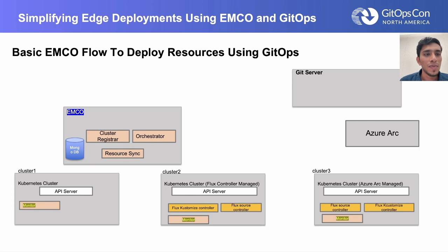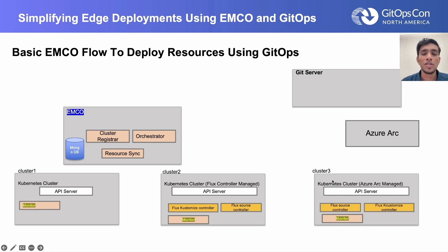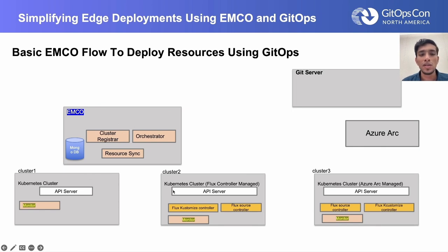Now let us understand the basic EMCO flow with GitOps — deploying resources to three clusters. We have cluster one, a direct cluster with no GitOps component. Cluster two and cluster three are GitOps-managed: cluster two uses Flux CD as a config agent, and cluster three is an Azure Arc managed cluster. We have a Git server, which can be local, GitHub, GitLab, etc. EMCO is shown with three key components: cluster registrar, orchestrator, resource synchronizer, and MongoDB.